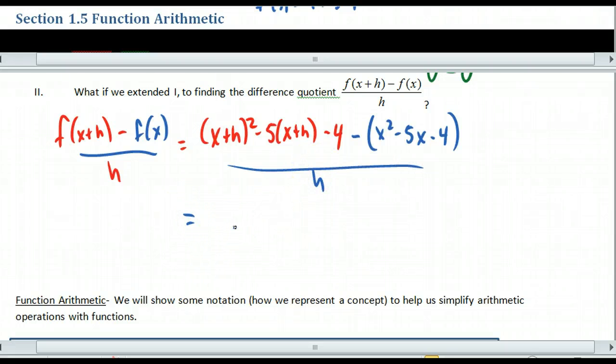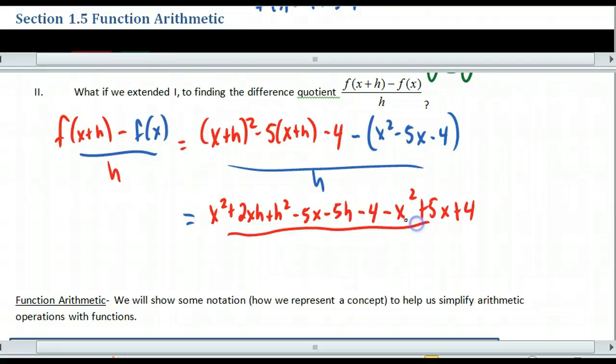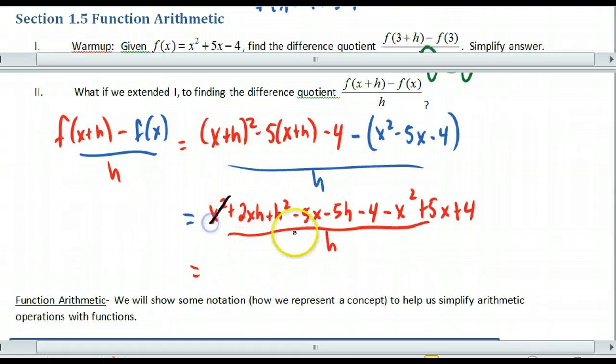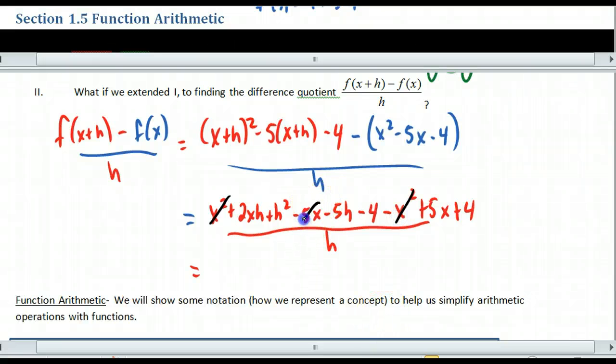So when I come to simplify, well my 4s will cancel after. Let's see what happens. I'm going to expand this. So this is x squared plus 2xh plus h squared minus 5x minus 5h. Make sure you distribute properly. Minus 4 and then I got negative x squared plus 5x plus 4 once I distribute this negative through. That's all over h. Now when I simplify here, x squared, x squared cancels off. Minus 5x, positive 5x cancels off. And then what else? There's the 4. That cancels off too.